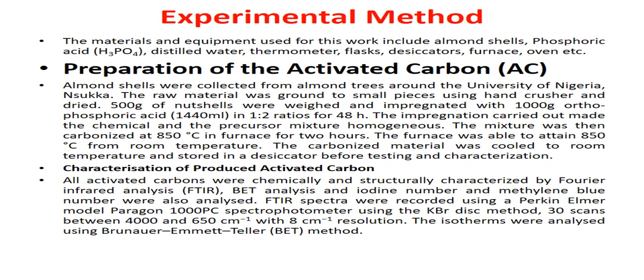Almond shells were collected from almond trees — almond fruits that fell from almond trees around the University of Nigeria, Nsukka. The raw material was ground to small pieces and powder using a hand crusher and dried. 500 grams of material were weighed and impregnated with 1000 grams of phosphoric acid in a 1:2 ratio for 48 hours. The impregnation made the chemical and the precursor mixture homogeneous.